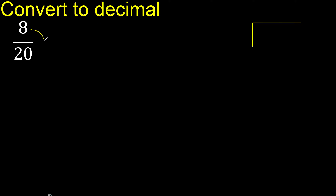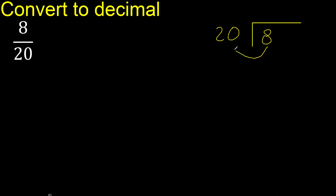8 divided by 20. 8 is less than 20, therefore complete with 0. Always complete with 0. Here: 0 point...